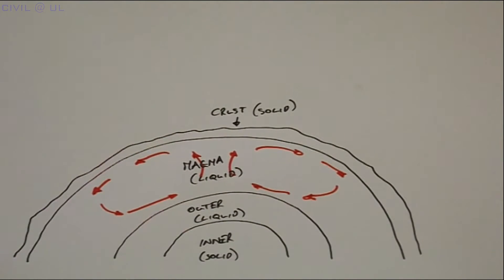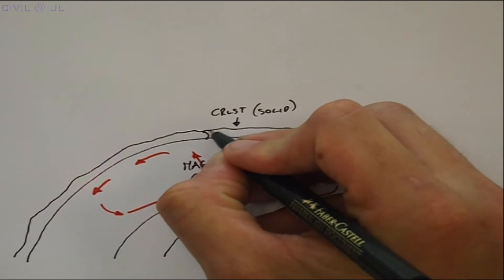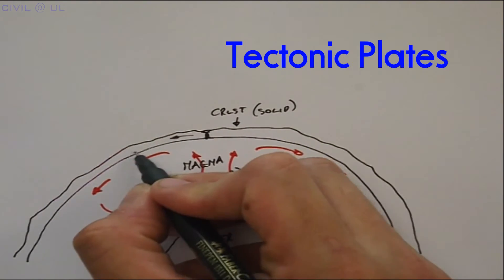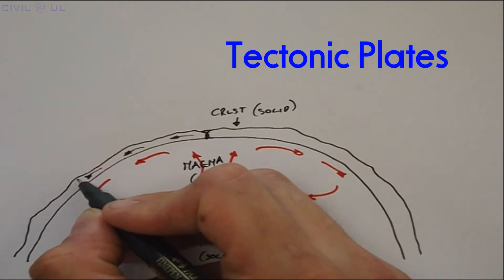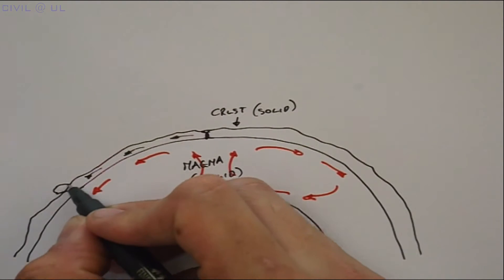The Earth's crust, being brittle, breaks into a series of plates. These are known as tectonic plates. There are 7 or 8 major plates, depending how they are defined.